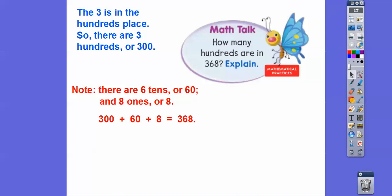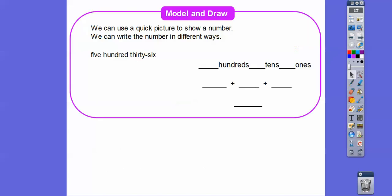And then if you want to keep going to keep with that number, there are 6 tens or 60 and 8 ones or 8. So here's 300 plus 60 plus 8 gets us this number, 368. That's going to lead us into this right here.